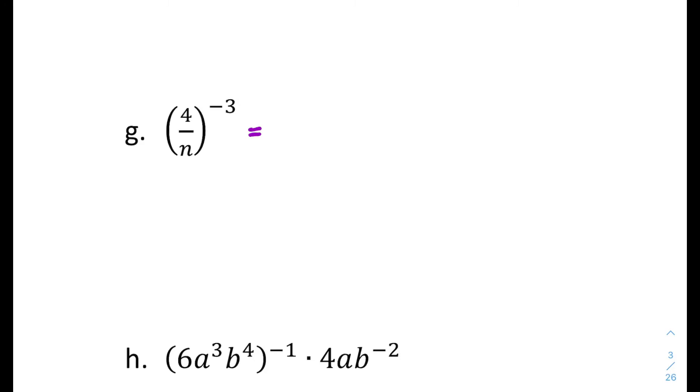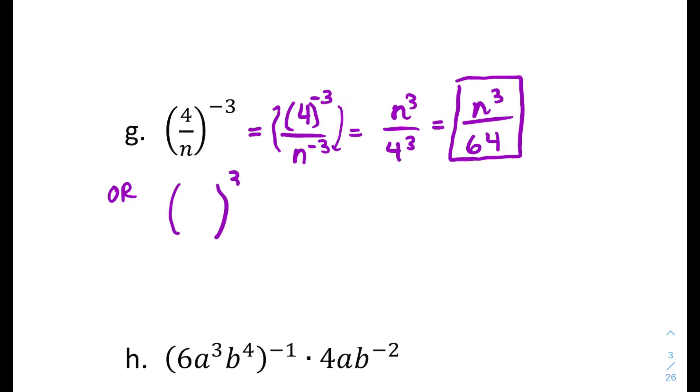A couple more. So I'm going to have my numerator and denominator both to the negative third here, since the whole fraction is to the negative third. And that means that essentially my 4 to the negative third is going to become 4 to the positive third on bottom and n to the positive third on top. So they kind of flipped. And 4 to the third is 64. You could instead think of it as like 4 over n to the negative first to the third power and flip it and make it n over 4 and then raise it to the third. That would be okay too.